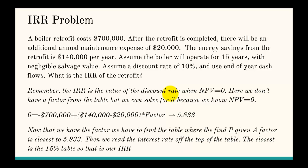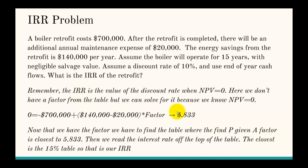But we know something we don't usually know: what the net present value is, and that it equals zero. So we work backwards. We have a net present value of zero, an initial $700,000 cost, and savings of $120,000 per year, and we're multiplying by an unknown factor. We solve for that factor, and to give an NPV of zero, it should be 5.833. Now we look at different tables with different discount rates and see which table has a value closest to 5.833.